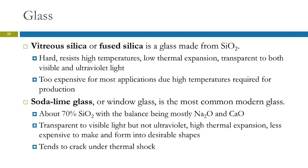There are other types of glass. Vitreosilica, or fused silica, is a glass made just from SiO₂. It's very hard, has a high melting point, and a low thermal expansion coefficient — meaning when you heat it, it doesn't change its density or expand very much. It's transparent to both visible and ultraviolet light, so vitreosilica glass will not protect you from UV rays. It's very expensive because it requires really high temperatures to make.